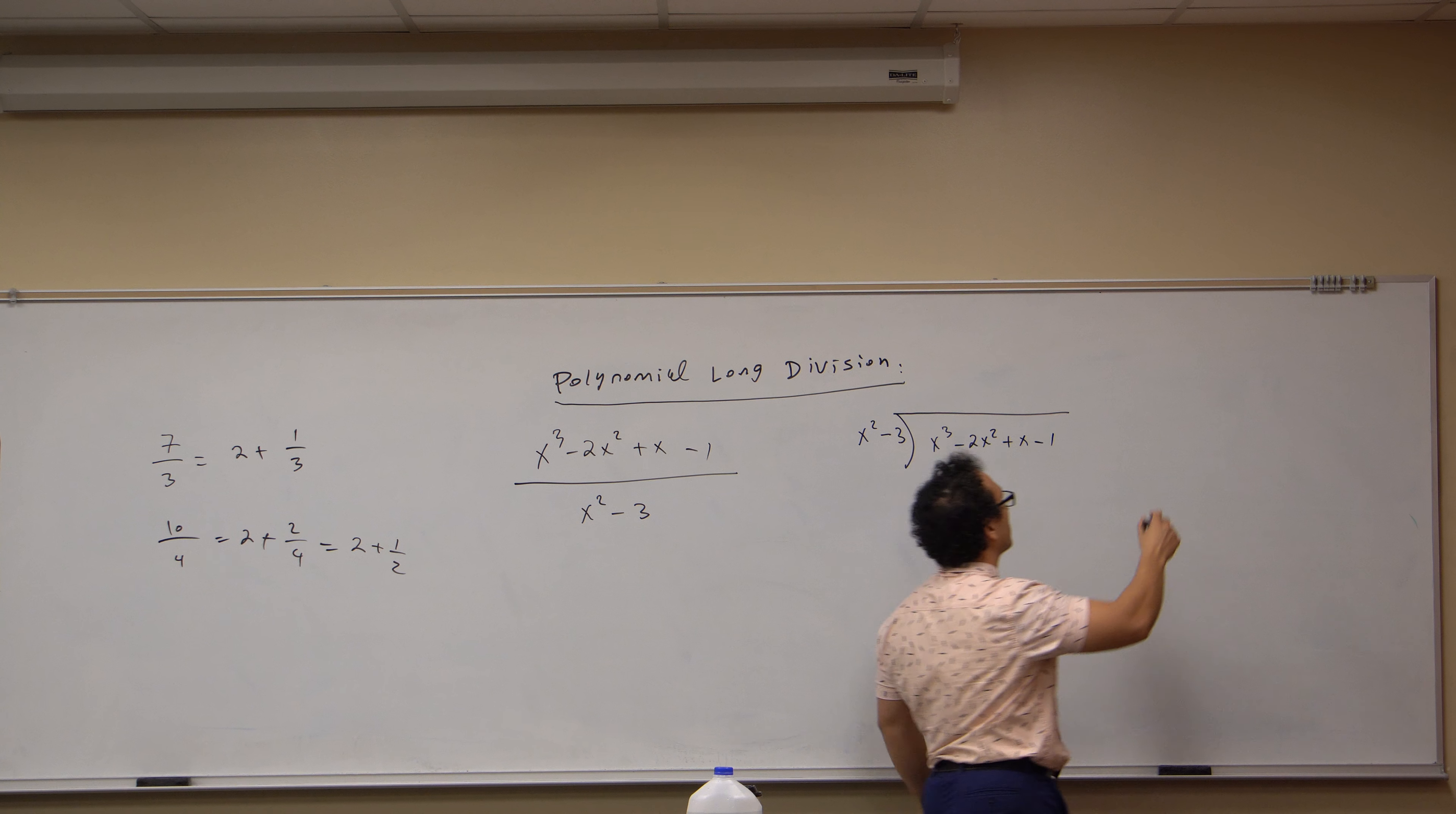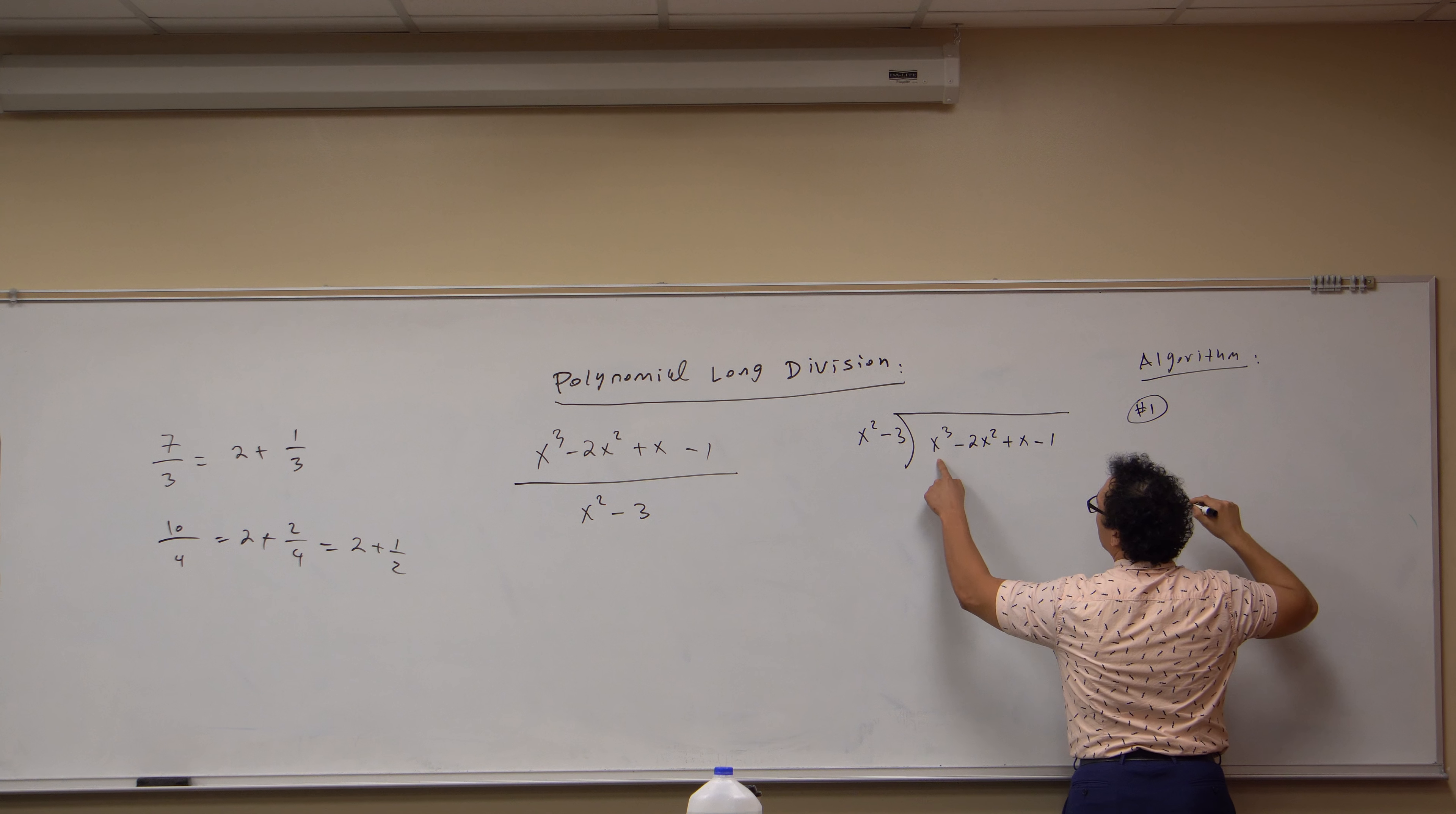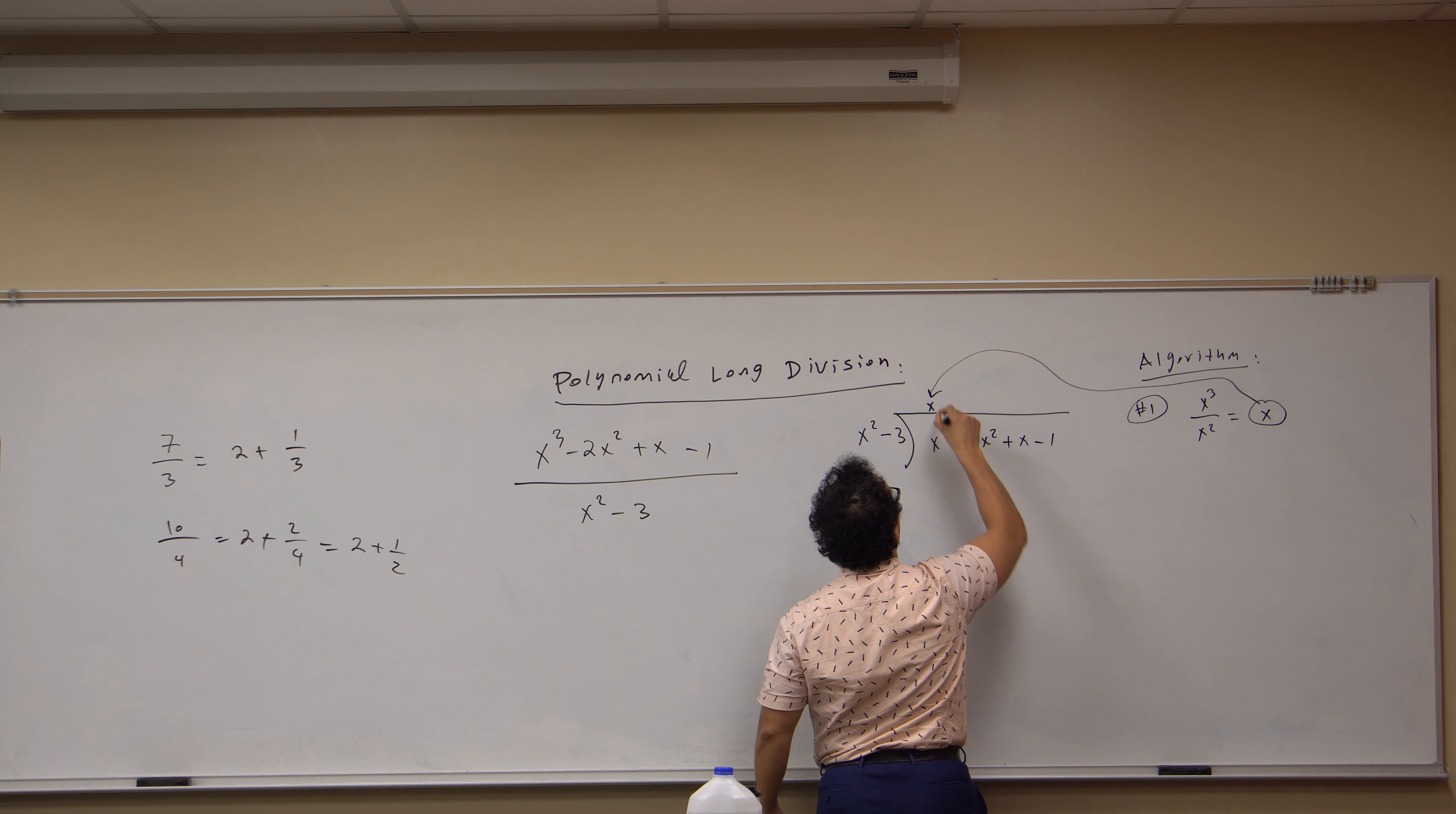Here's the algorithm. Step one: Get this leading value, x cubed, divided by the leading value here, x squared, compute the ratio, that's x. We get that value, put it on top of the house, x here.